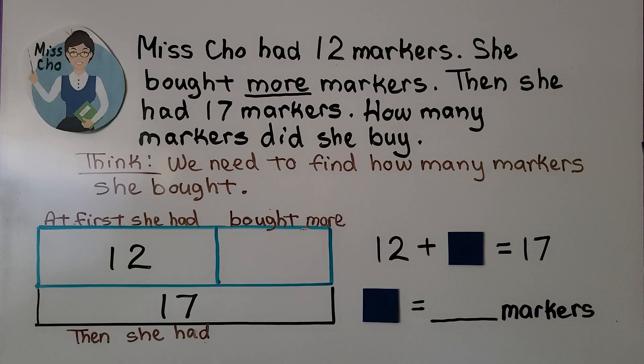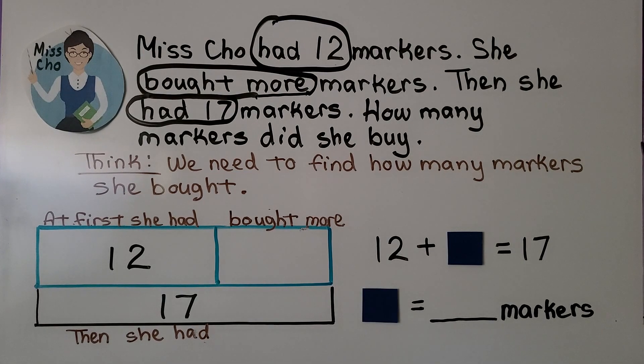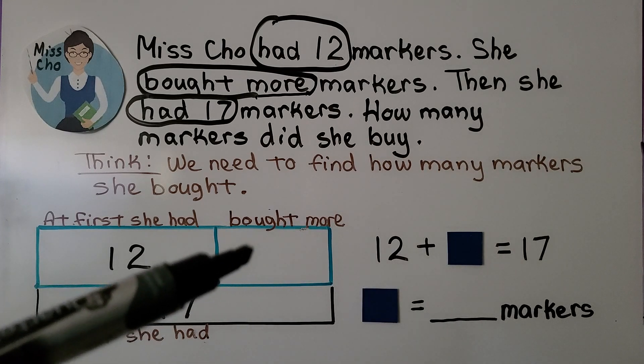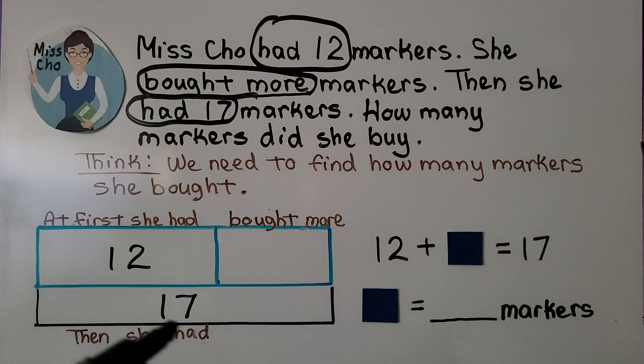Miss Cho had 12 markers. She bought more markers. Then she had 17 markers. How many markers did she buy? We think we need to find how many markers she bought. We can circle the important information. At first she had 12, she bought more, we don't know how many more. Then she had 17.